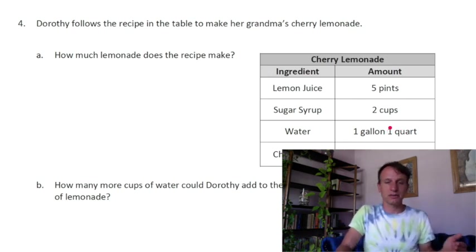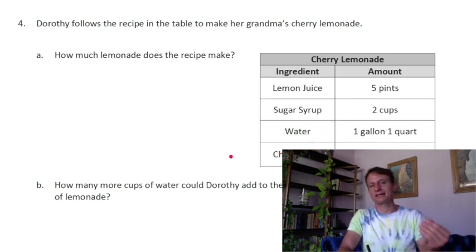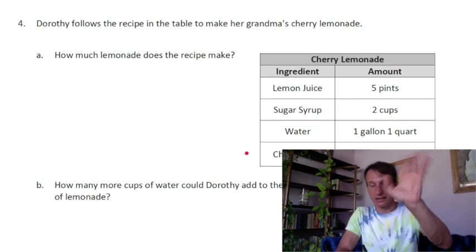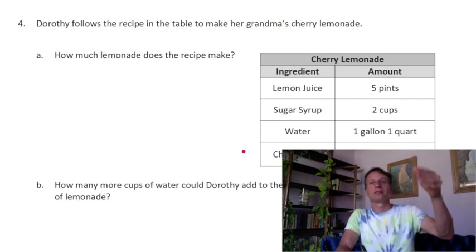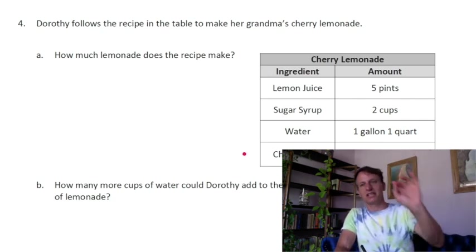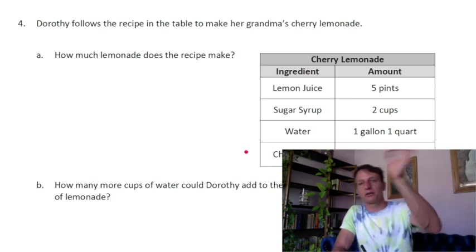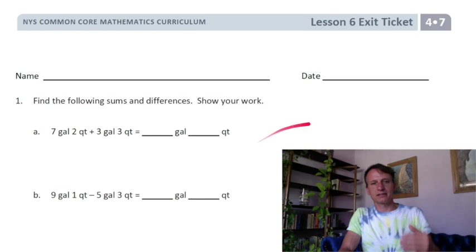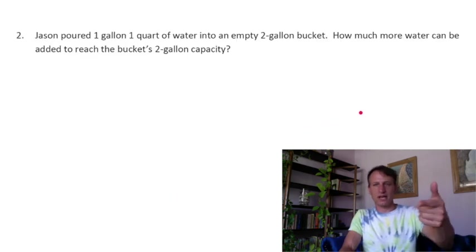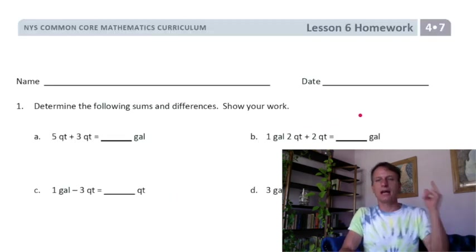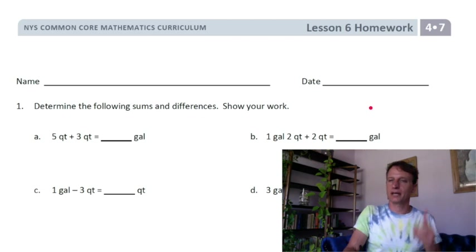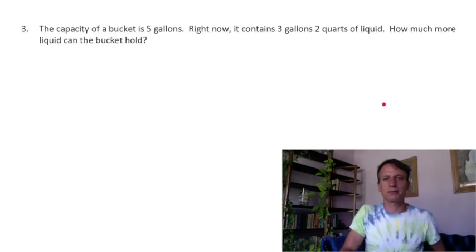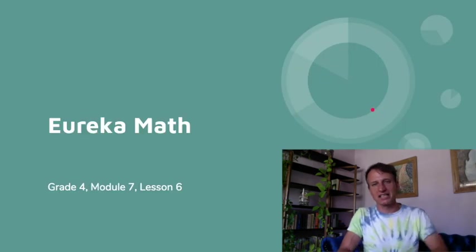How many more cups could she add to reach an exact whole number? For example, if it ended up being three gallons and fifteen cups, one more cup would take you to four gallons — that's what that question is asking. The exit ticket is a little addition and subtraction with one word problem. For homework, head over to the homework time video and do the homework step by step, question by question.